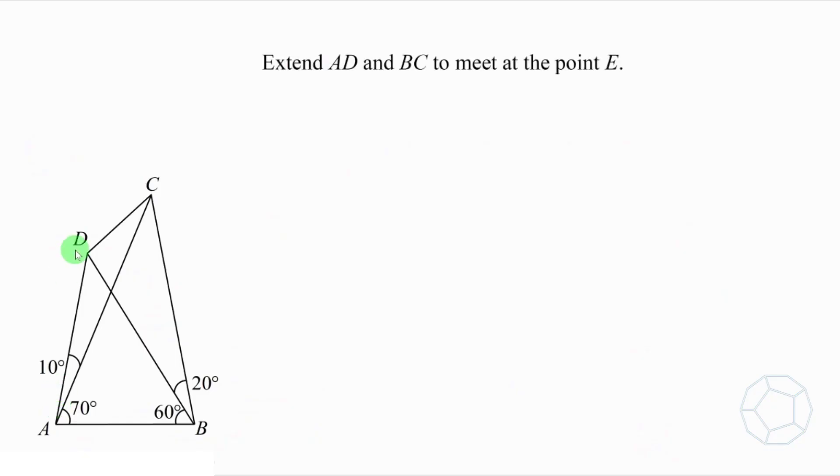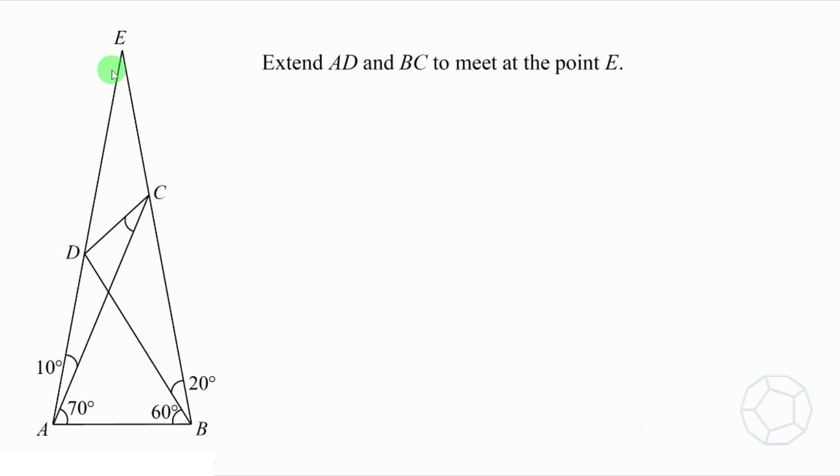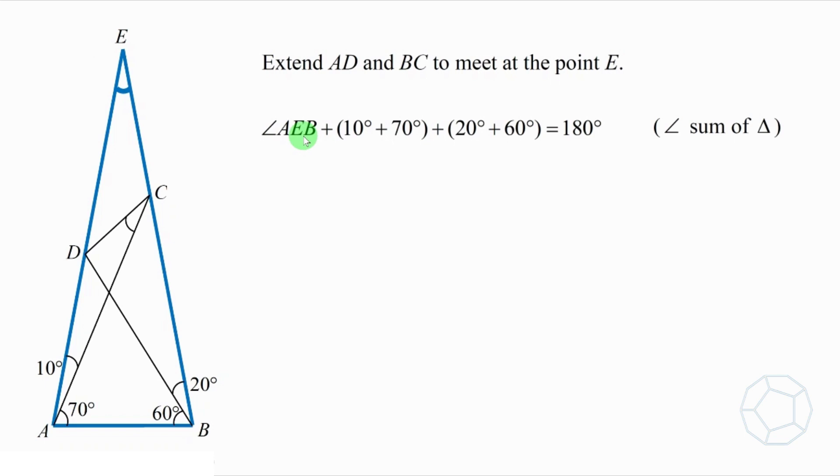First of all, we're going to extend AD and BC to meet at the point E. Let's look at the largest triangle AEB. Using angle sum of triangles, we can find that angle AEB is equal to 20 degrees.